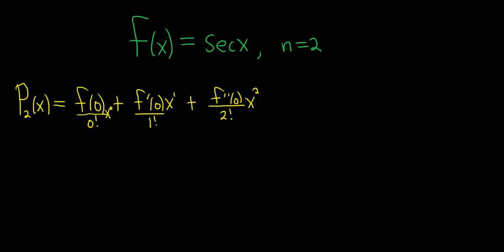So if there was another one, like if it was n equals 3, we would go to the third derivative divided by 3 factorial and x cubed.